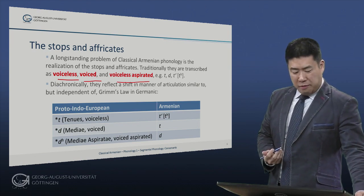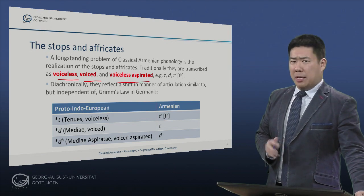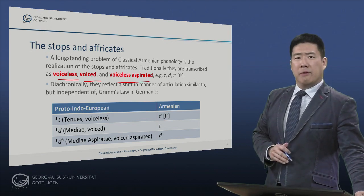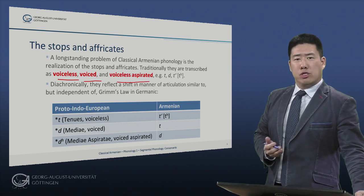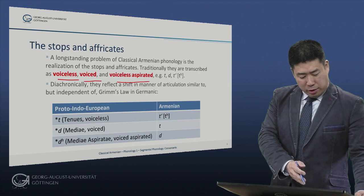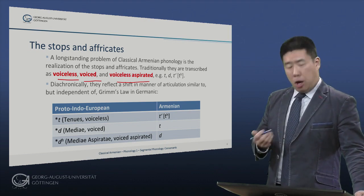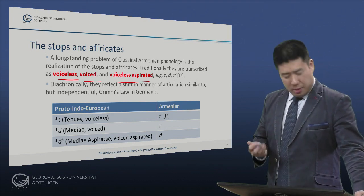In diachronic terms, they reflect a shift in manner of articulation, similar to but independent of Grimm's law in Germanic, whereby Proto-Indo-European T became Armenian T.